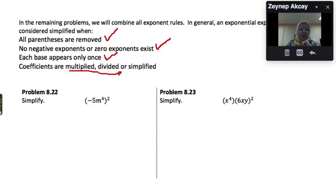So let's look at the first problem. What do we get if we square this parenthesis? So we will distribute 2 between each factor.